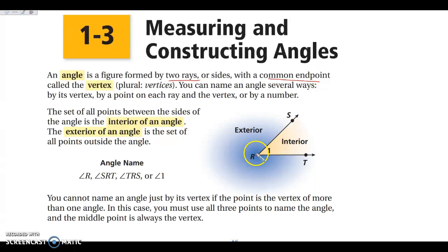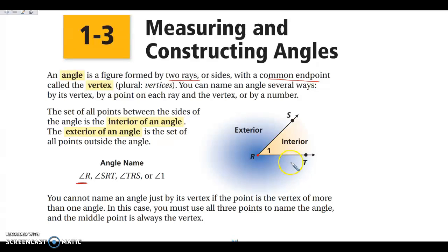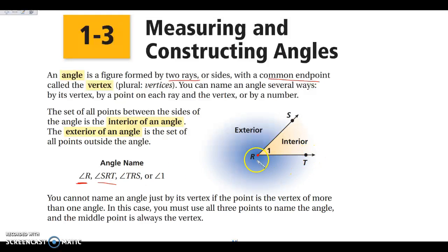There are several ways that we can name an angle. The first is just by naming it with the vertex letter, which is angle R. So I could name this angle here as angle R. I can also name the angle by a point on the ray, the vertex, then a point on the other ray. So I could name this angle as SRT or as TRS.